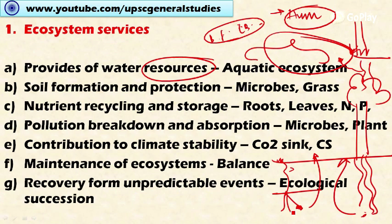The next ecological function is pollutant breakdown and absorption. Complex organic pollutants are broken down by various microorganisms like bacteria and fungi, and these broken-down pollutants are then absorbed by living plants. This helps in removing pollutants present in the ecosystem.